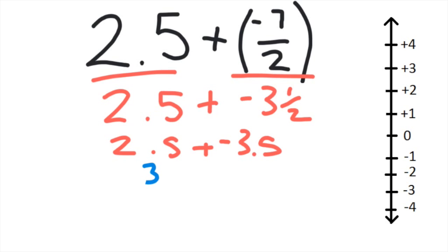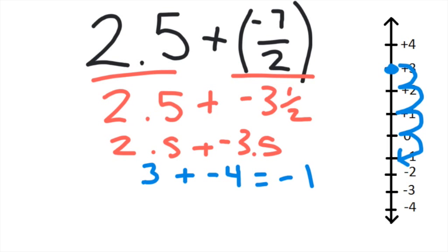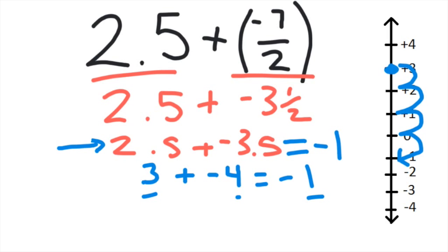Let's round this to three plus negative four. I start at negative three on my number line and I'm adding four negatives, so I need to go down: one, two, three, four. So my answer should be close to negative one. What we really did was four minus three, which is one, and because the negatives are more powerful — there are more of them — the answer is negative. We do the same to the original: 3.5 minus 2.5 is one, and there are more negatives, so the answer is negative one, which matches our estimate.